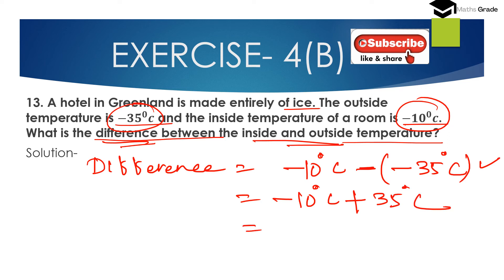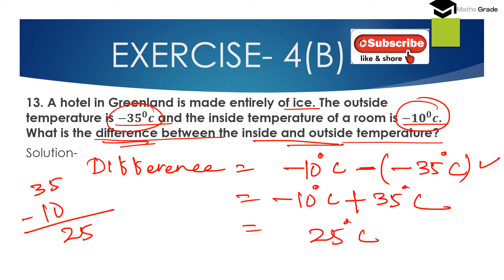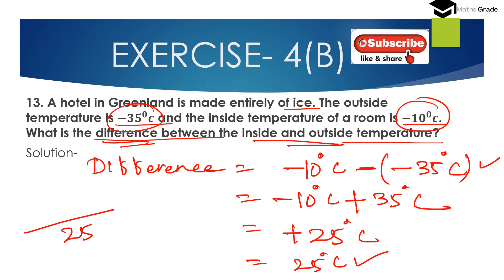Now minus 10 and 35 are of different sign. We subtract the smaller integer from the bigger: smaller is 10 and bigger is 35, so 35 minus 10 is 25. We place the sign of the bigger integer, which is 35 and positive, so the result is plus 25 degrees centigrade. The difference between the inside and the outside temperature of the room is 25 degrees centigrade.